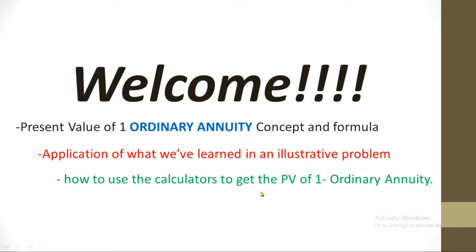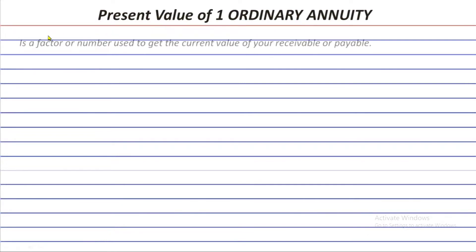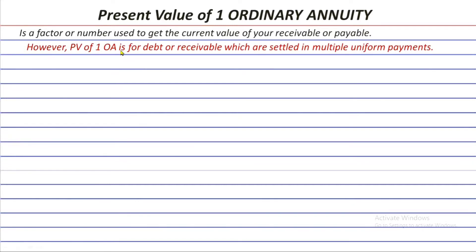What is the present value of one ordinary annuity? It is still a factor or number used to get the current value of your receivable or payable — the same as the present value of one. However, the present value of one ordinary annuity is used for debt or receivables which are settled in multiple uniform payments. It is used to get the present value of your debt or receivable as long as the payments are multiple and uniform.